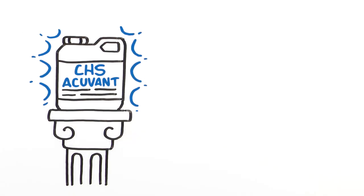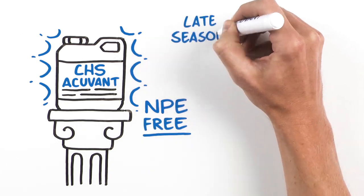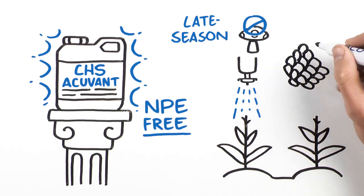Unlike many other drift adjuvants, CHS Acuvant is NPE-free, so you can apply late season corn fungicide at the post-emergence stage without the risk of causing arrested ear syndrome.